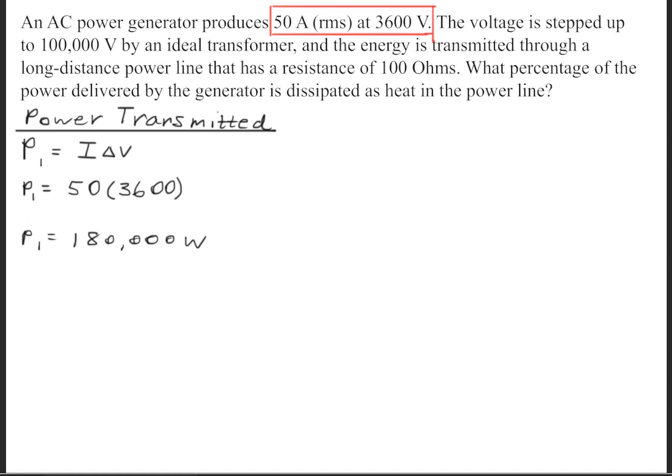So this is the power that's being sent across the line or the wire. Next, we'll need to calculate the power loss. We'll begin by finding the current that is traveling along the wire. So we'll take the power that we just calculated and divide it by the voltage. We'll take 180,000 watts and divide that by 100,000 volts. That'll give us a current of 1.8 amps going across the wire.